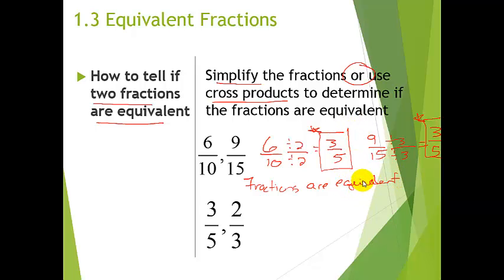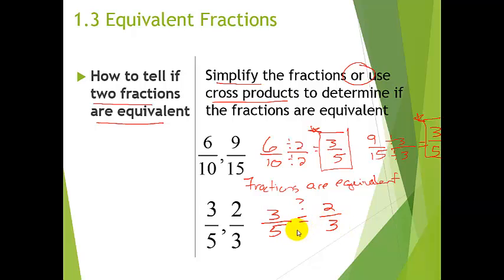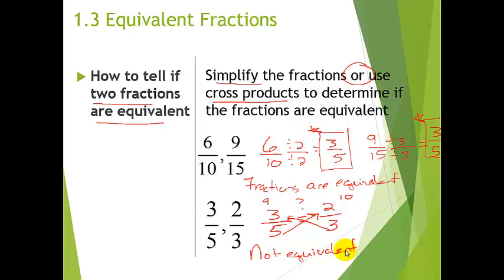If the fractions are already in simplest form, you can use cross products. Write the two fractions and set them equal to each other to find out. Cross up: 5 times 2 is 10, then cross the other way: 3 times 3 is 9. Since 9 does not equal 10, the fractions are not equivalent. Most important thing you need to know is your multiplication facts — we'll work on this in class.